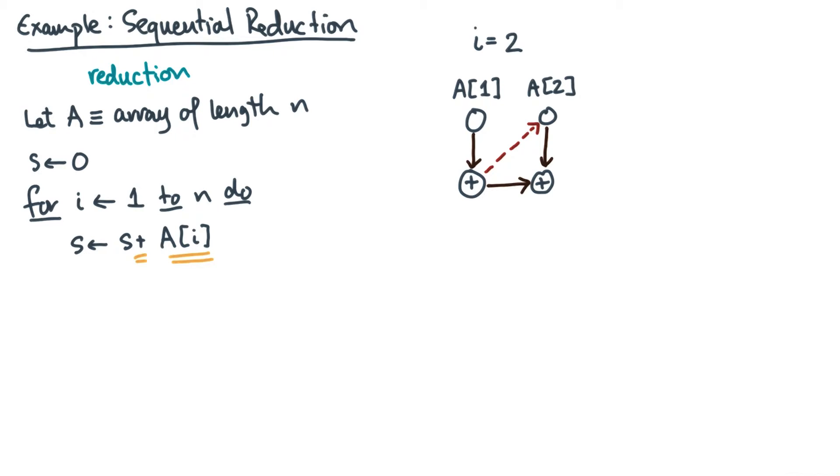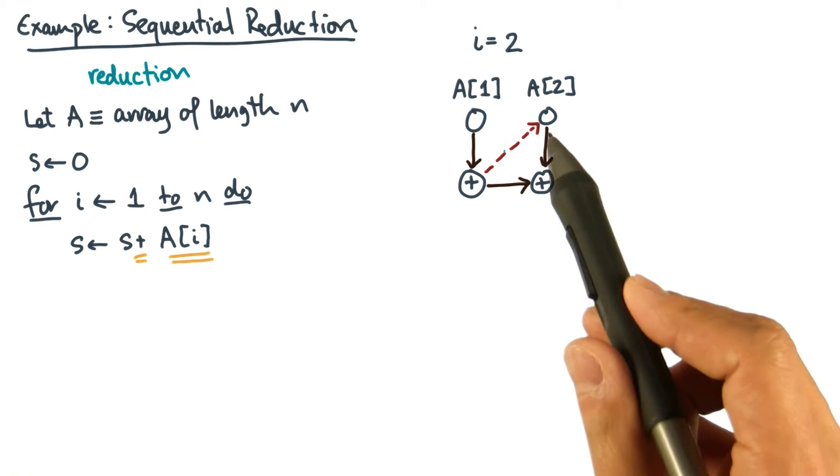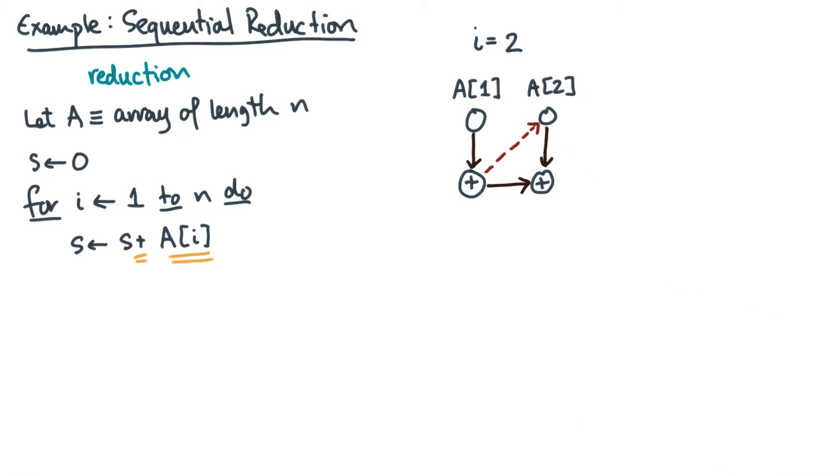Now technically, there's another dependence which goes from this plus to this load. So why is that? The reason is that the code is being executed sequentially, so there's actually what's called a control dependence between executions of the body of the for loop. That is, this statement at i equals two can't execute until this statement at i equals one has completed.